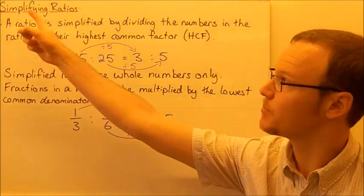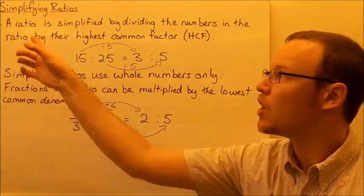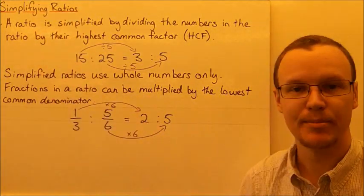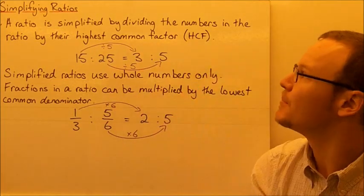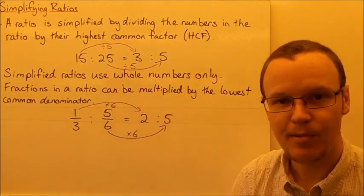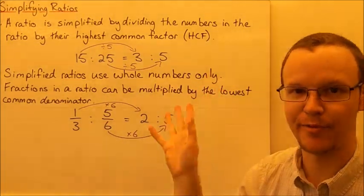Today we're going to look at simplifying ratios. A ratio is simplified by dividing the numbers in the ratio by their highest common factor.